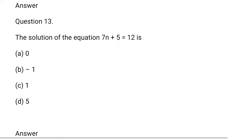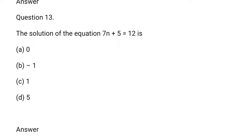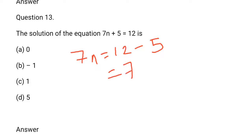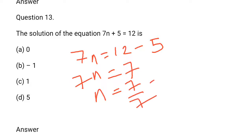Question number 13: The solution of 7x plus 5 is equal to 12. So, 7x is equal to 12 minus 5. 12 minus 5 is 7. So, x is equal to 7 divided by 7, which is equal to 1. c option is correct.